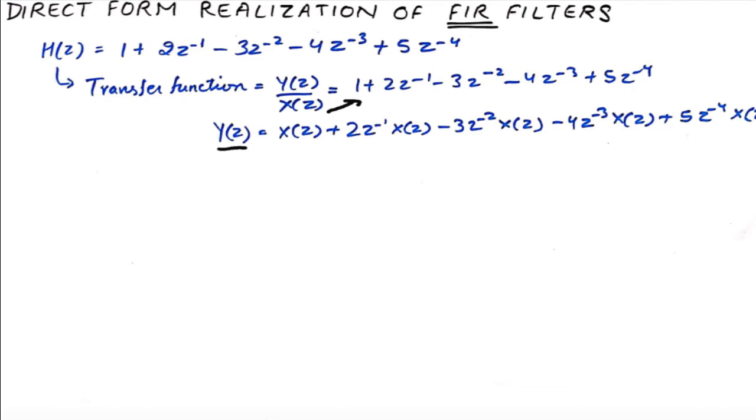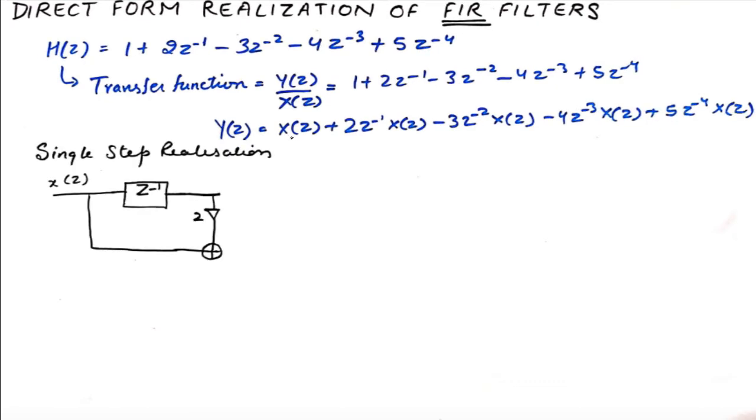And the realization of such a filter becomes so very easy that you simply take X in the beginning. Then you delay the X of Z and multiply it with 2 to generate this term. So here you get X of N minus 1 and you delay it and multiply it with 2 to get these 2 terms here.